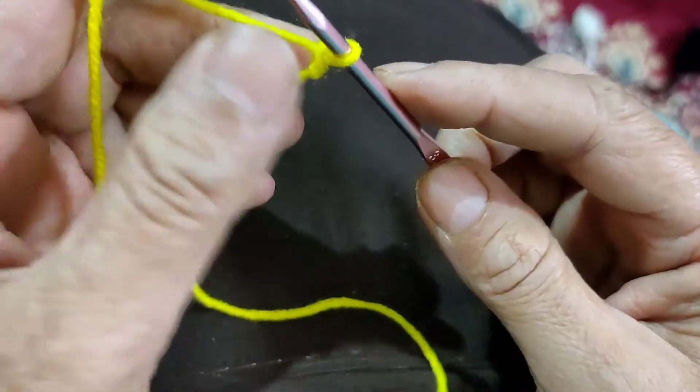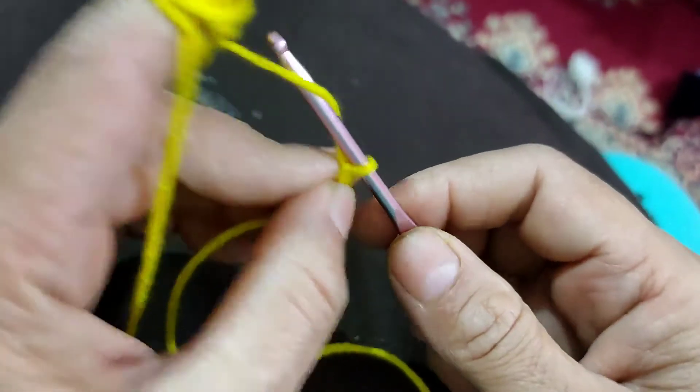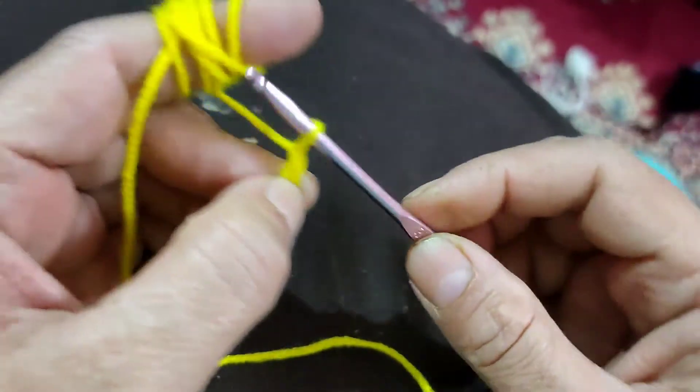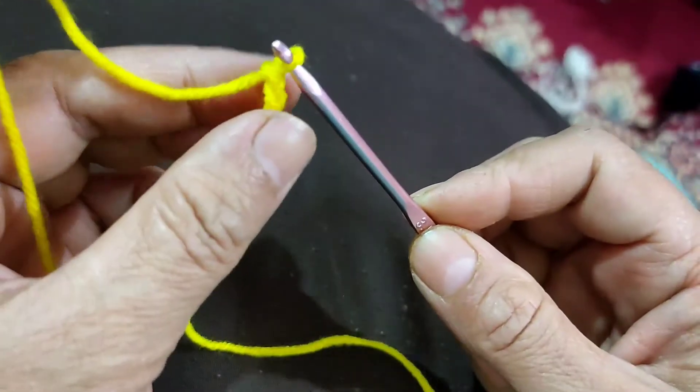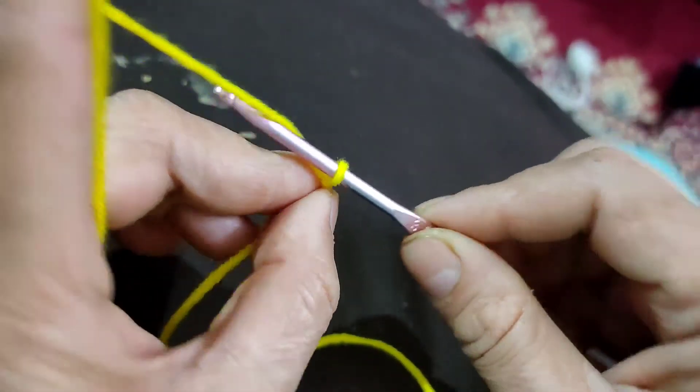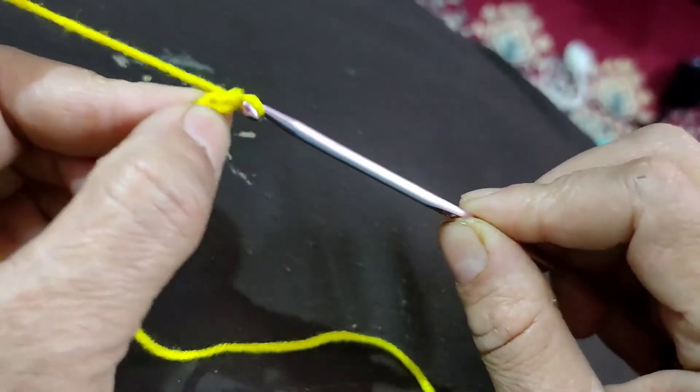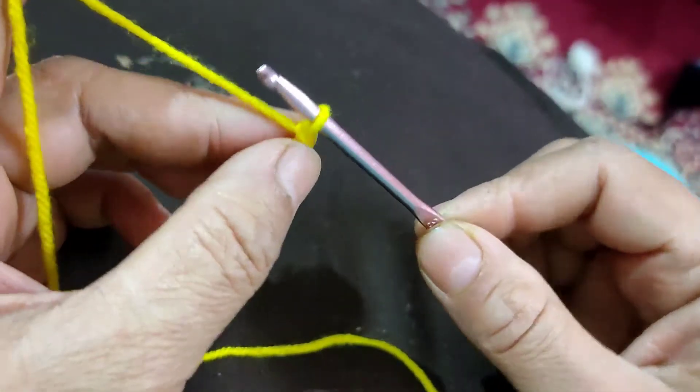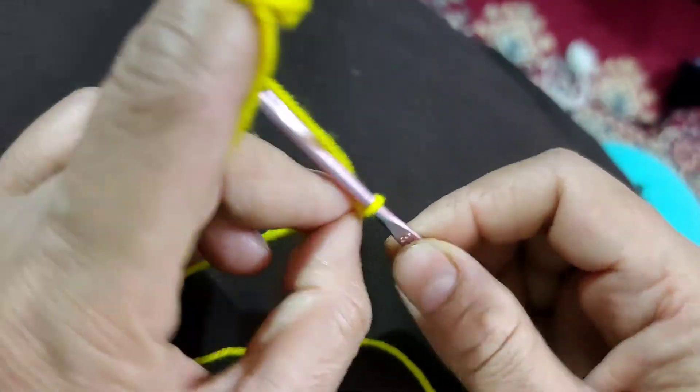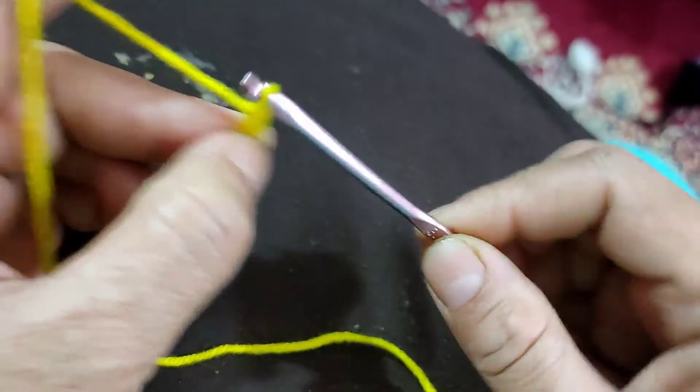To make a chain, first of all yarn over and pull it through. Once again, yarn over and pull it through the loop. That's how we made the two chains. Yarn over and pull it through the loop. Once again, yarn over and pull it through.